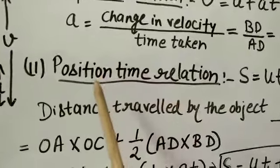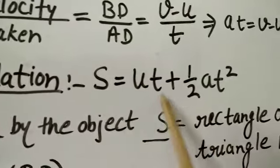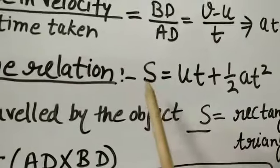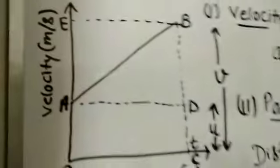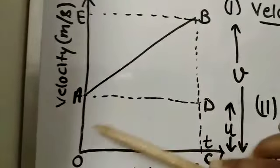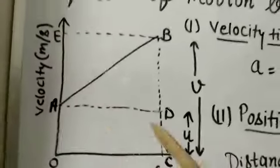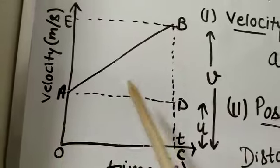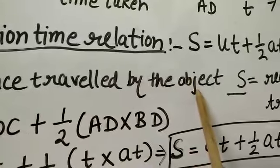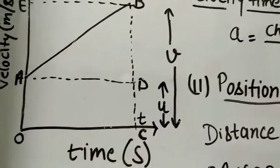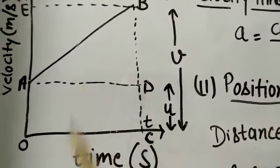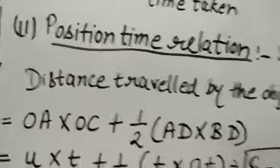Now the second equation of motion is the position-time relation: S = UT + ½AT². The area under the velocity-time graph defines the distance covered by the body. So we calculate the area under the graph to find the distance traveled, which equals S.